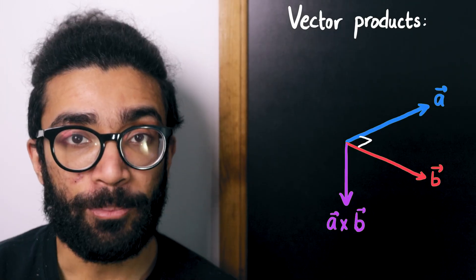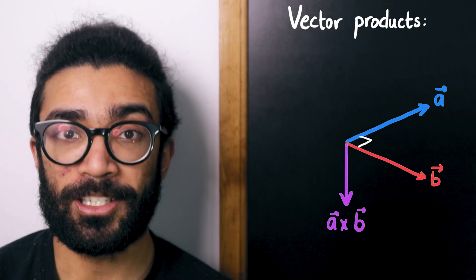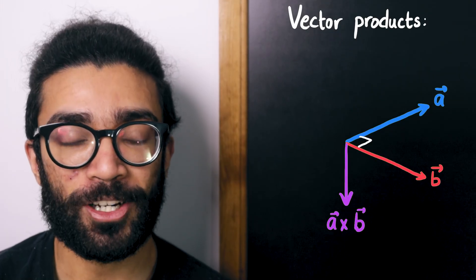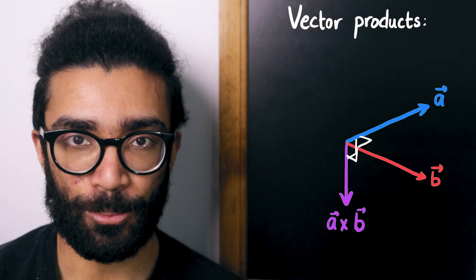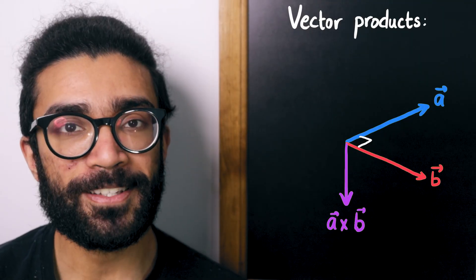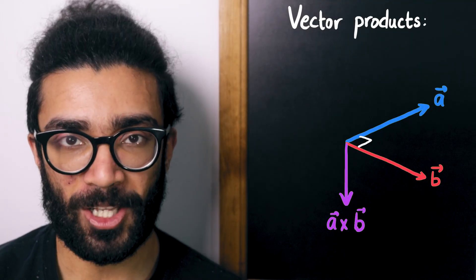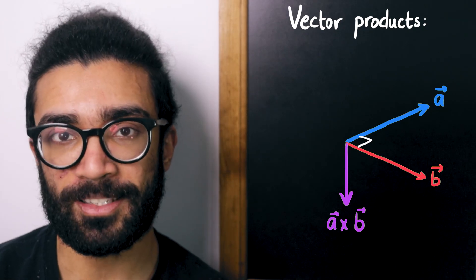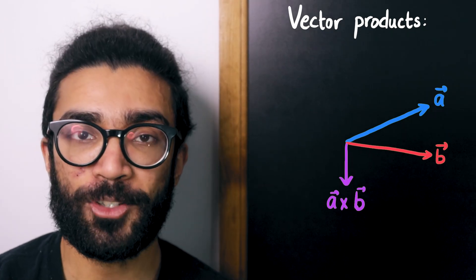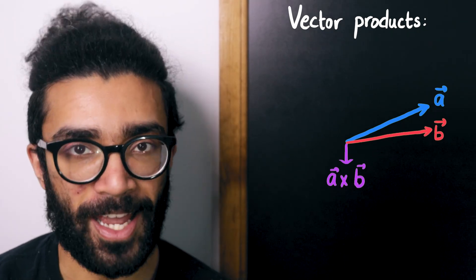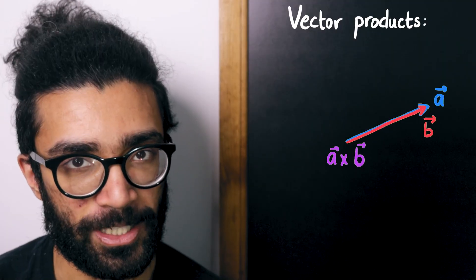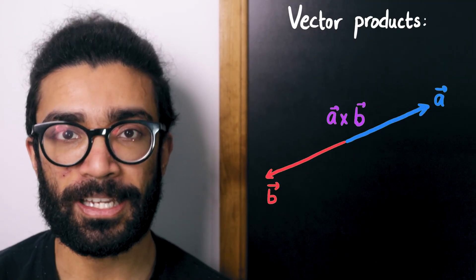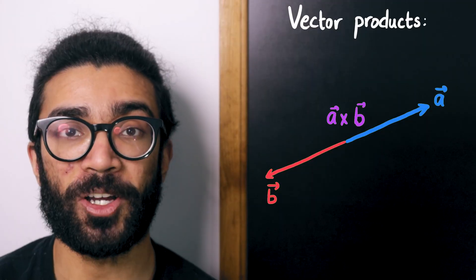If A and B are exactly perpendicular to each other — at 90 degrees to each other — then the vector product A cross B will also be perpendicular to the original two, but its size will be as large as possible: equal to the size of A multiplied by the size of B. However, if the two original vectors A and B are exactly aligned with each other, or exactly anti-aligned, then the size of our vector product A cross B is going to be zero.